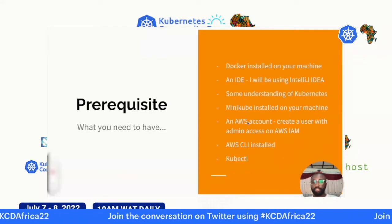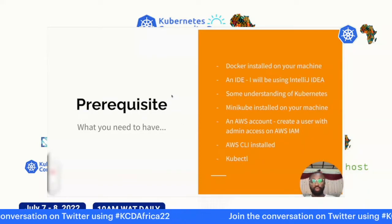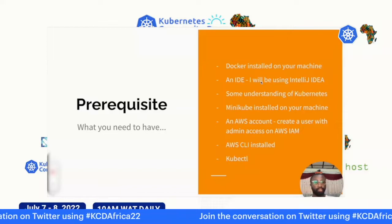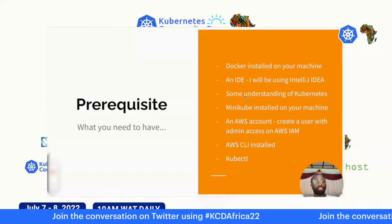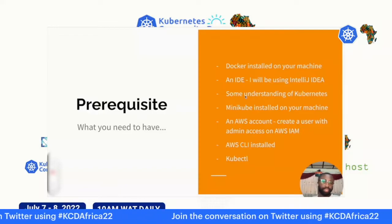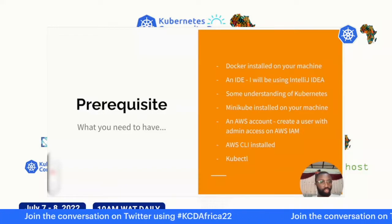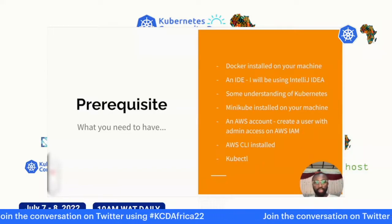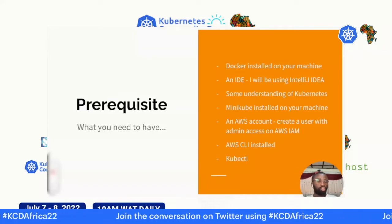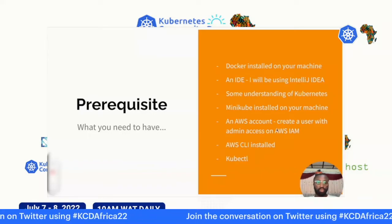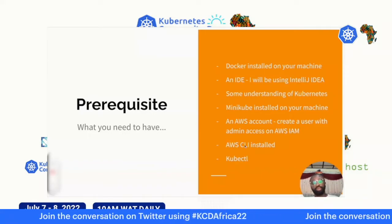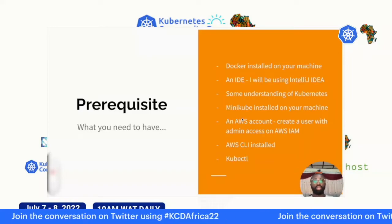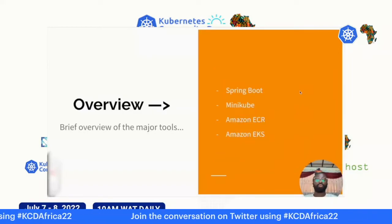Before following through, you need Docker installed, an IDE — I'll be using IntelliJ — and some understanding of Kubernetes. You need Minikube installed, which I'll cover. You need an AWS account with an IAM user with admin access, AWS CLI installed, and kubectl to communicate with both the local Kubernetes cluster and Amazon EKS.